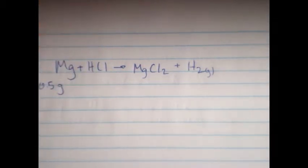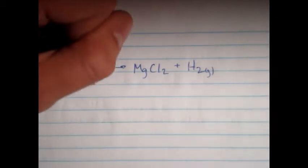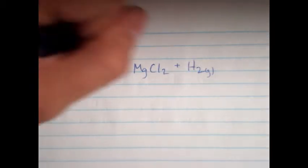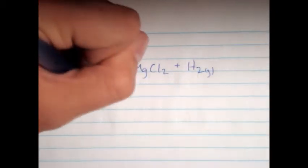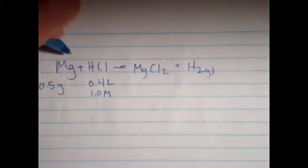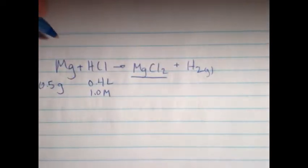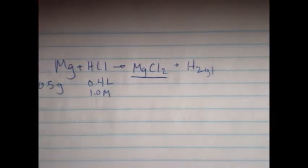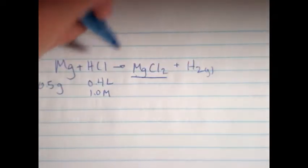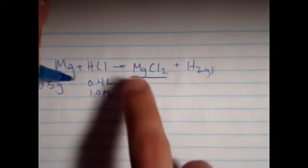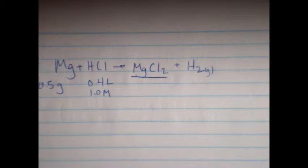And let's say you started out with 0.5 grams of magnesium, and you started out with, you poured 0.4 liters of 1.0 molar HCl into a test tube with 0.5 grams of magnesium in there, how much MgCl2 would you get? This is what we want if we're asked. So this is how we're going to do it.